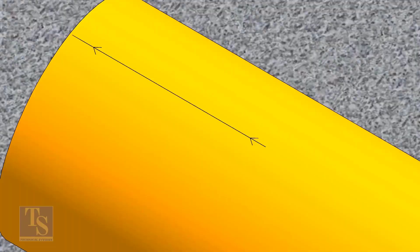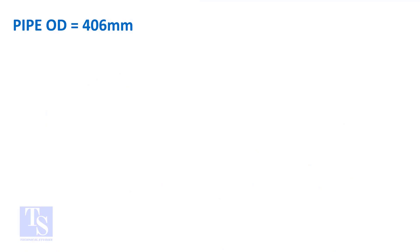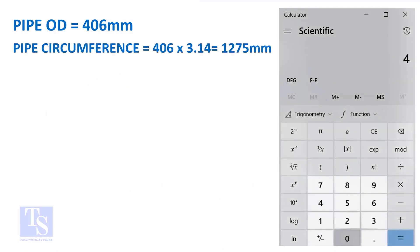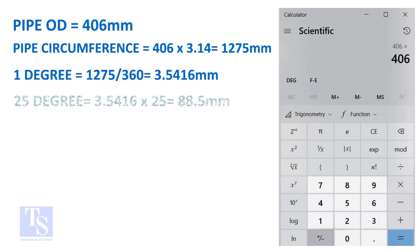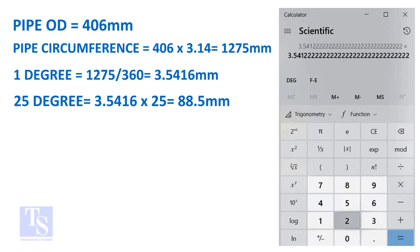Let us calculate the circumferential distance or arc length for 25 degrees. Multiply the OD by 3.14, divide by 360, then multiply by the degrees. Now you have the arc length of 25 degrees. You can apply this formula to get the arc length of any degree.